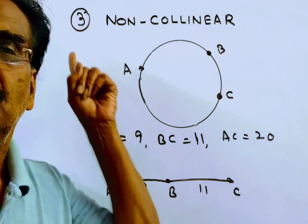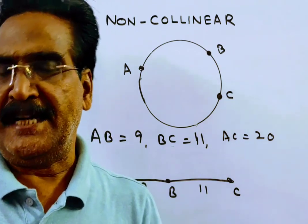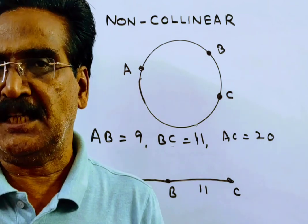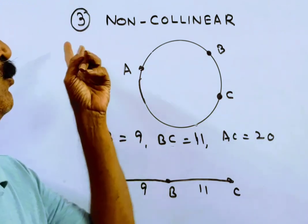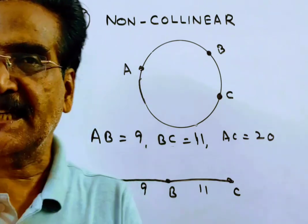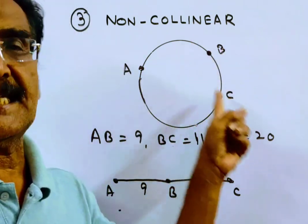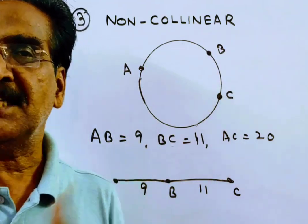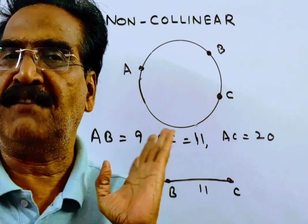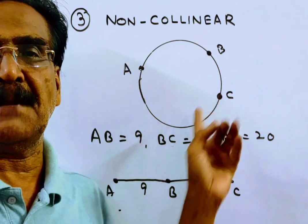Through three non-collinear points—that is, points that do not lie on the same straight line—we can draw only one circle. Here A, B, C are non-collinear points. They do not lie on the same straight line, so we can draw only one circle passing through these three points.